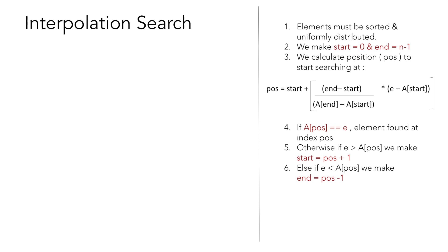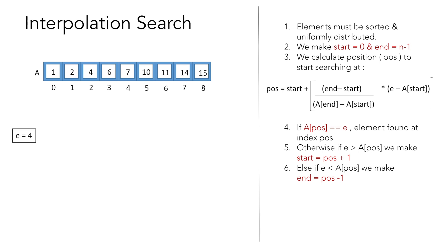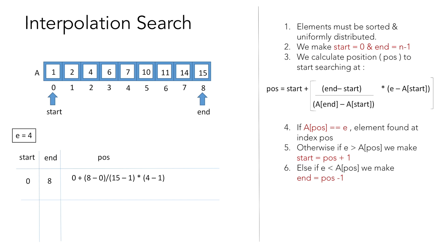Let's try this out using the previous example. We are looking for element 4, and initially start equals 0 and end equals n-1, that is 8 in our example. Using the formula, we put in the corresponding values of start, end, and E to get: 0 + (8 - 0) / (15 - 1) * (4 - 1), which simplifies to 8/14 multiplied by 3. Note that we calculate the division part in decimals to avoid getting 0. So position equals 0.57 multiplied by 3, which is 1.71, and taking the integer value gives us position 1.